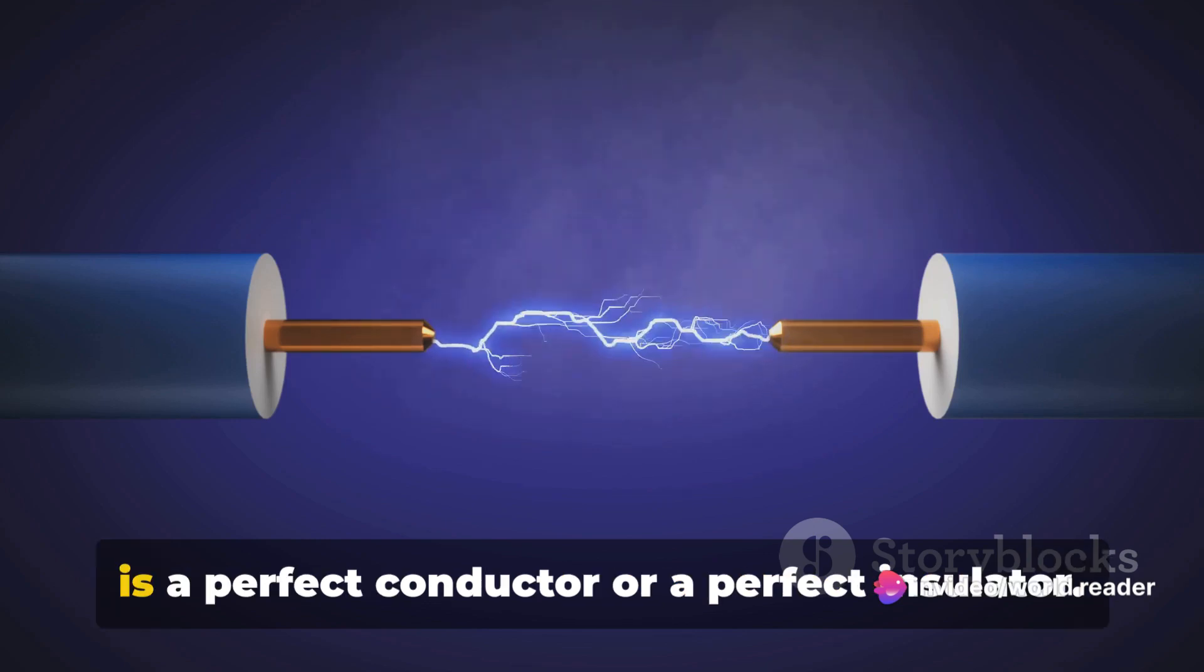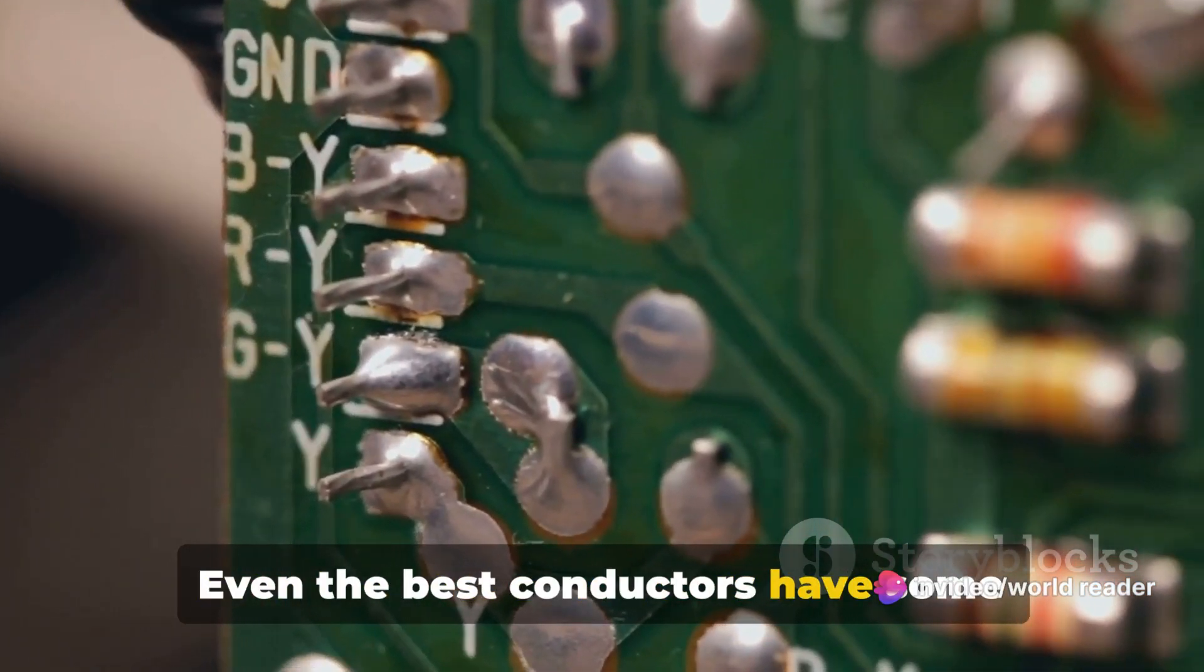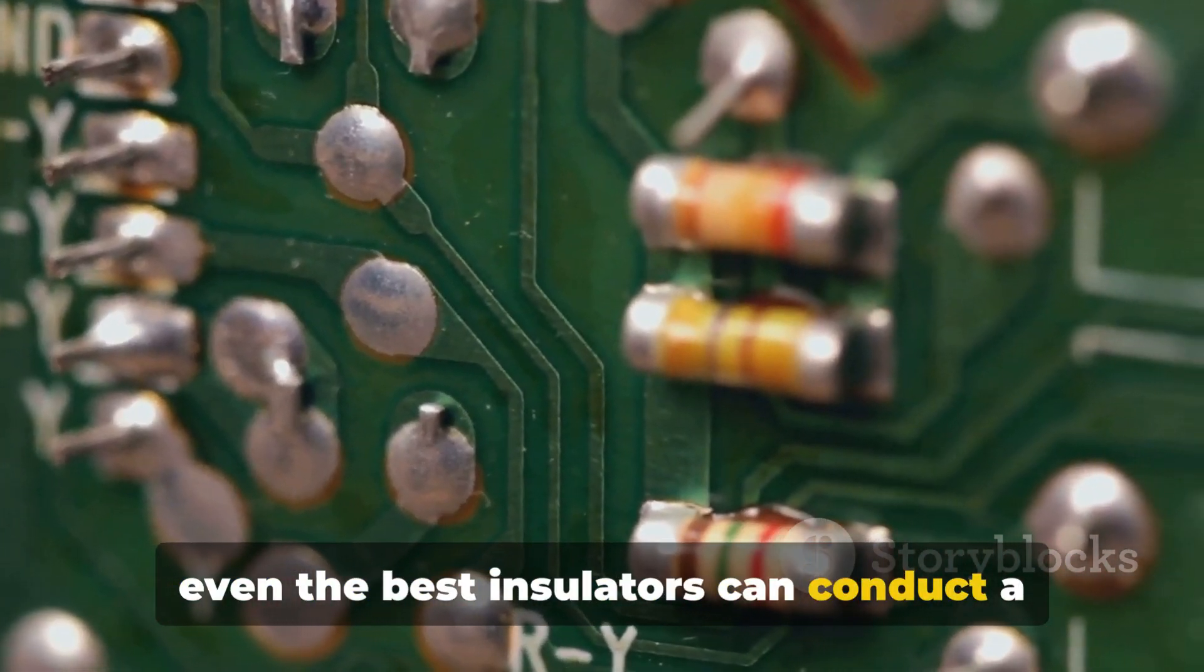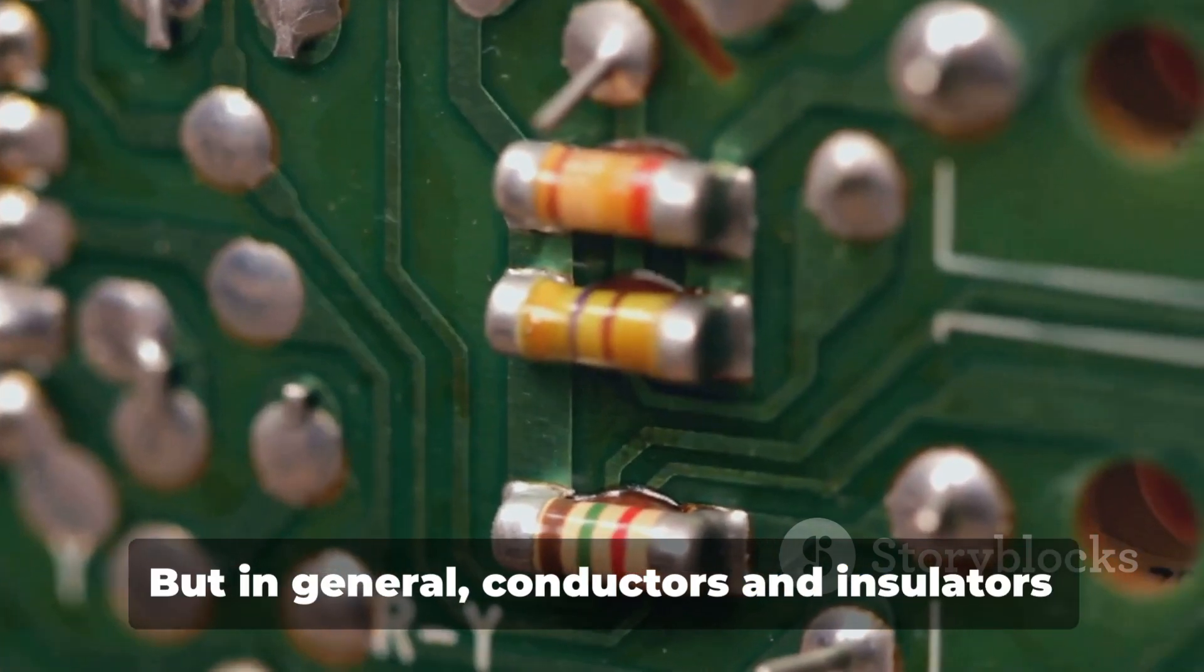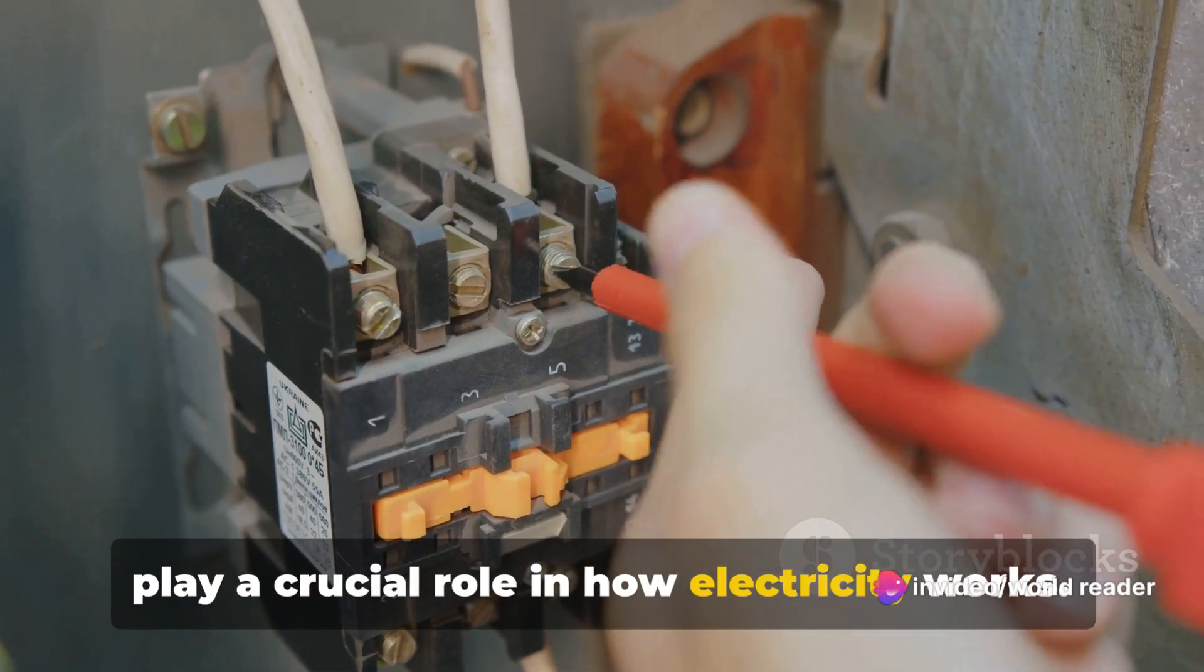It's important to note that no material is a perfect conductor or a perfect insulator. Even the best conductors have some resistance to the flow of electricity, and even the best insulators can conduct a little bit if the conditions are right. But in general, conductors and insulators play a crucial role in how electricity works.